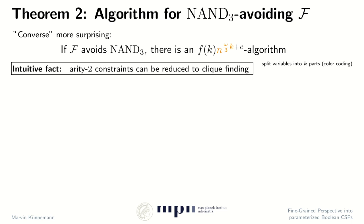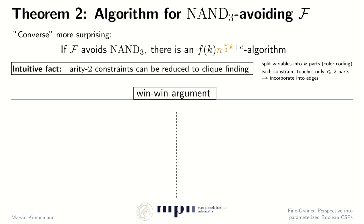We observe that each constraint now only touches at most two parts. So if we know the corresponding choices for the two parts, then we can determine whether a constraint is satisfied or not. We can incorporate this information into the edges of a graph.